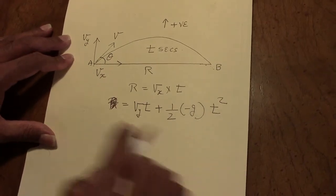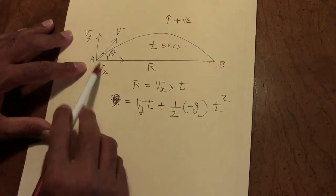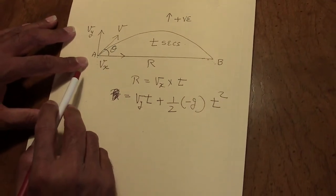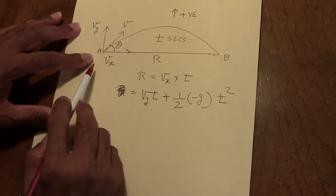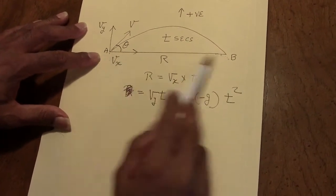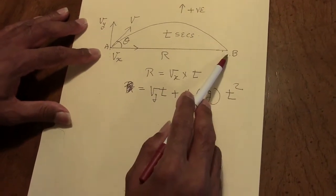A projectile is fired from point A with velocity V at an angle theta to the horizontal. We are required to find the range of the projectile, in other words the distance from A to B, B being the point where the projectile hits the ground.